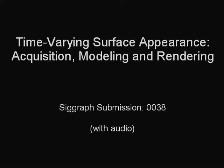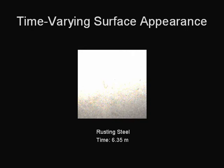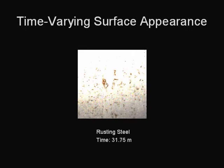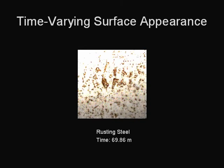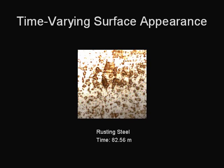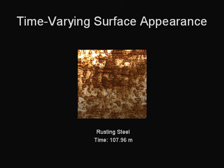We describe a complete pipeline for time-varying surface appearance from acquisition to rendering. The appearances of many surfaces evolve with time. In this example, we see rust forming on a steel plate, leading to characteristic spatial patterns and a decrease in shininess.